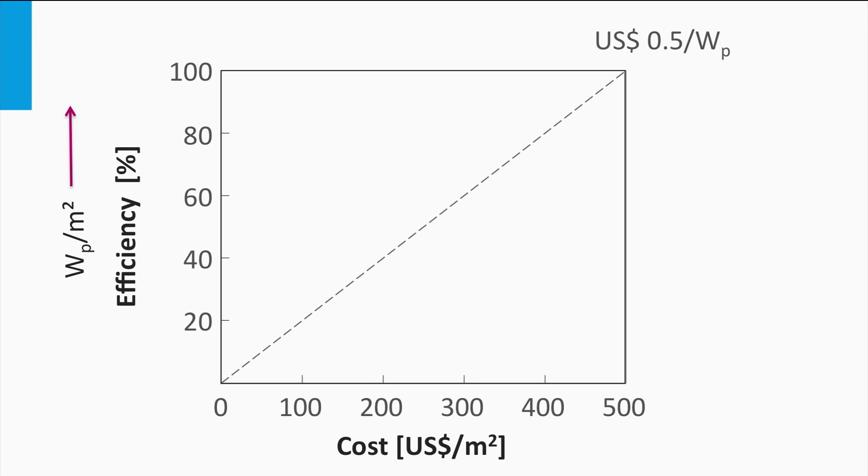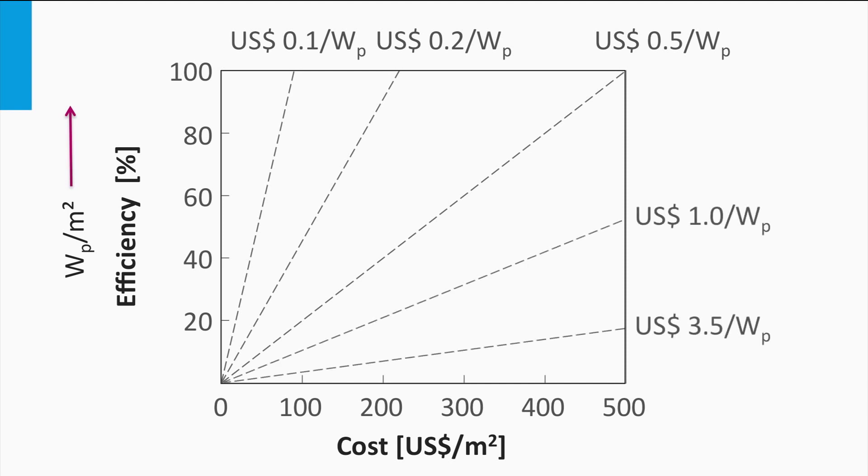The cost price per watt peak corresponds to the cost price of the energy generated by the solar cell. In this example, the dashed line represents half dollar per watt. If the slope of these dashed lines is very steep, the cost price per watt is low. Whereas, when the slope of the dashed lines becomes less steep, the cost price per watt peak is getting significantly higher. To compete with other energy sources, you would like that your PV technology overlaps with the steepest lines in these graphs.